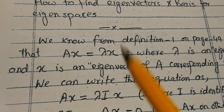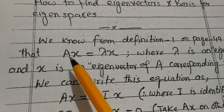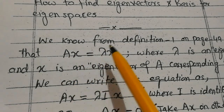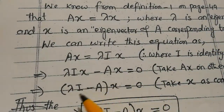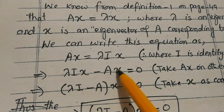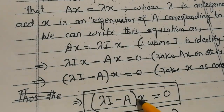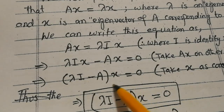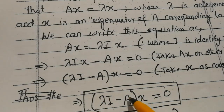From the previous lecture we know that all vectors which do not change their direction under a transformation are called eigenvectors, and we have the equation Ax = λx. Rearranging gives λIx − Ax = 0, and finally (λI − A)x = 0. To find eigenvalues we take the determinant equal to zero, but to find eigenvectors we use this same equation in matrix form.